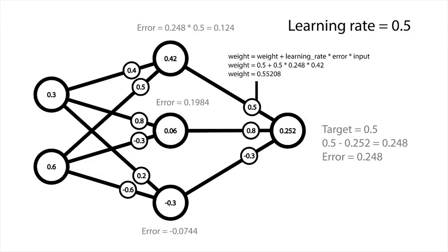Now we do the weight updating. Remember, weight equals weight plus learning rate times error times input. If we substitute the values, that leaves us with 0.5 plus 0.5 times 0.248 times 0.42, which equals 0.55208, which replaces that weight's old value of 0.5.